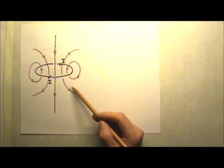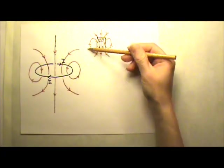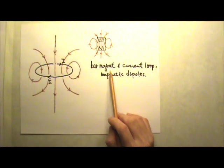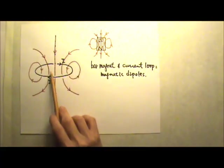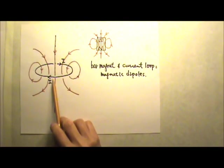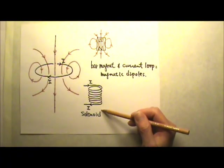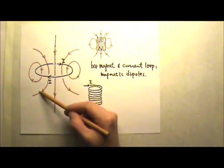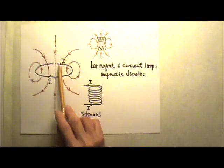These field lines are like the field lines produced by a bar magnet. A bar magnet is a magnetic dipole, which means current loops are also magnetic dipoles. Because a current loop acts like a bar magnet, a current loop is also an electromagnet. To make a strong electromagnet, we use many current loops — a coil called a solenoid. All field lines go through inside the loop; on the outside they spread out, so the magnetic field is strongest inside the loop.